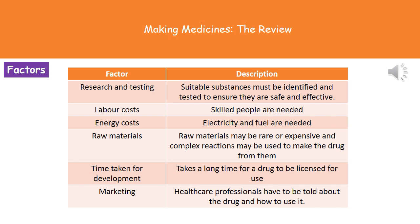The third factor is energy costs. Any time we are running manufacturing machinery we obviously need electricity, and electricity costs money, so the more machinery we've got or the longer it has to run the higher those energy costs will be. The fourth factor is raw materials. Some of the raw materials we use to make medications might be quite rare or expensive, and in some cases we need very complicated reactions to extract the drug from the original plant and turn it into our final drug product, so raw materials themselves can be very costly.